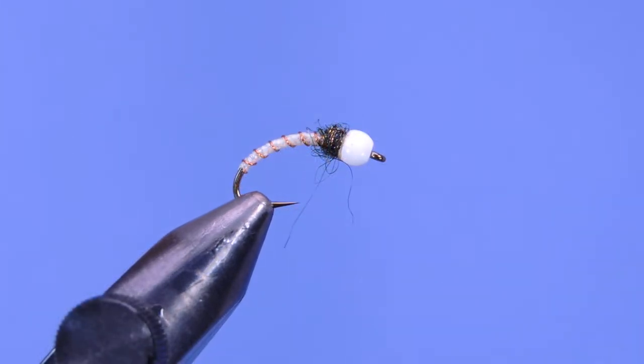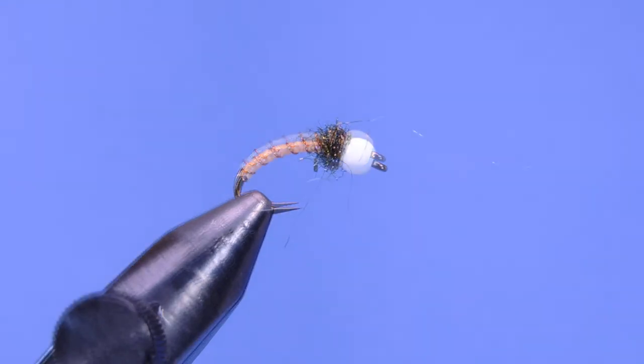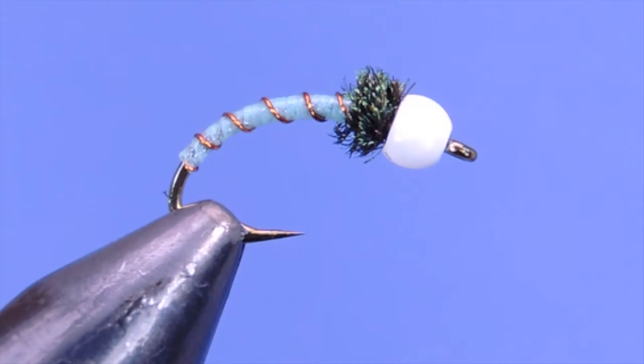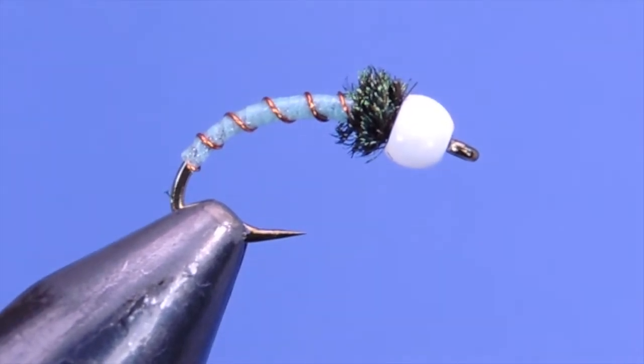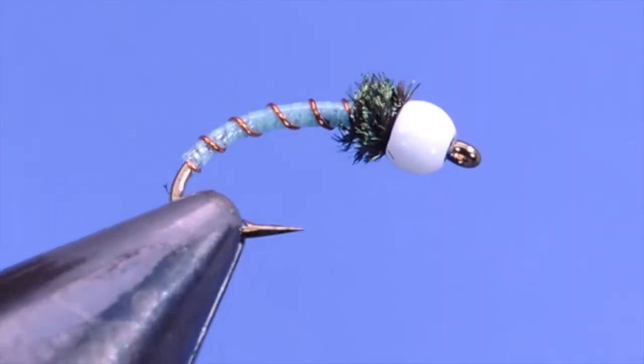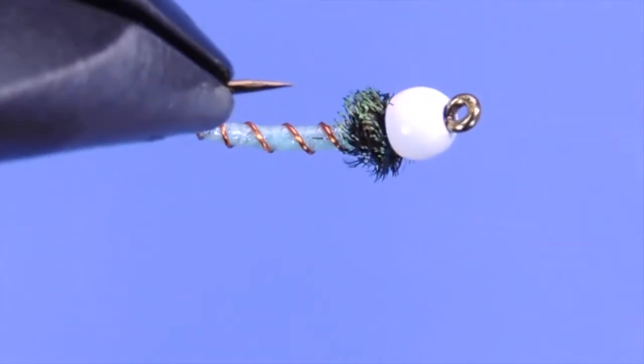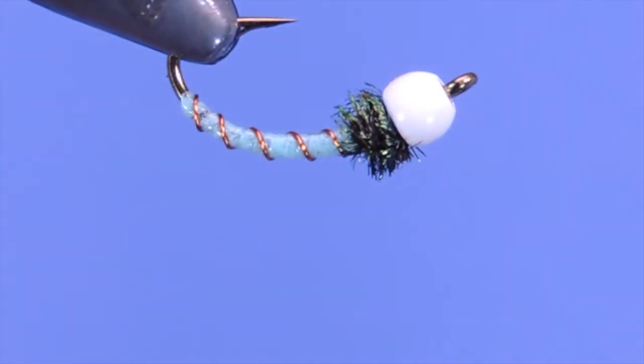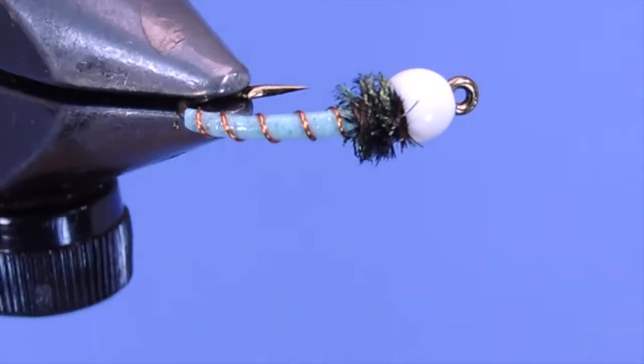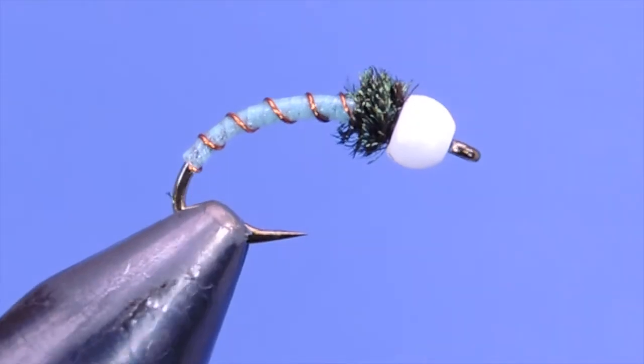This just differentiates your fly from some of the other food sources. So I tie this in a number of colors. The blue is the one I started with and the one I've had the most success with, but I've also done the other colors which UNI carries: the yellow, the pink, the orange, the white, and the green. So let's have a look at the material list and get started tying this fly.